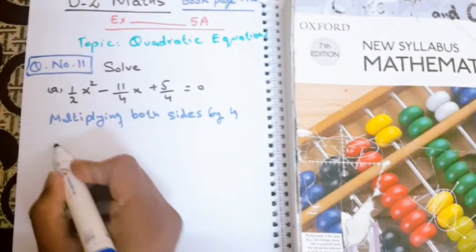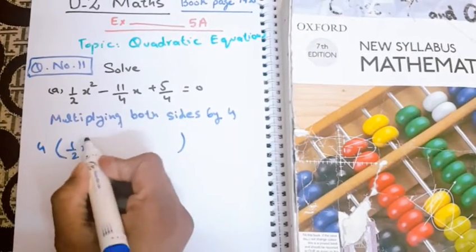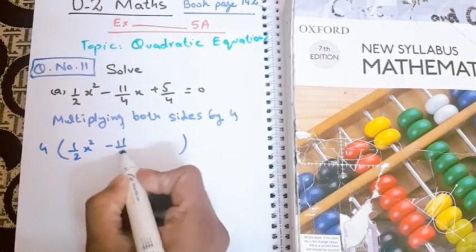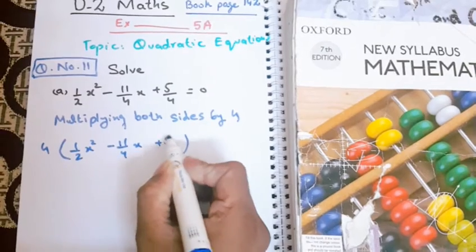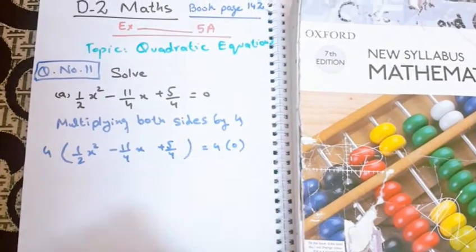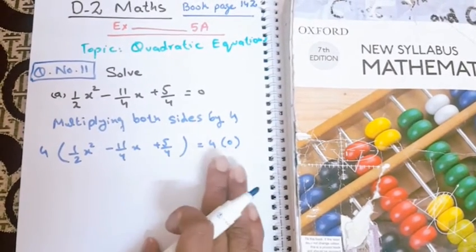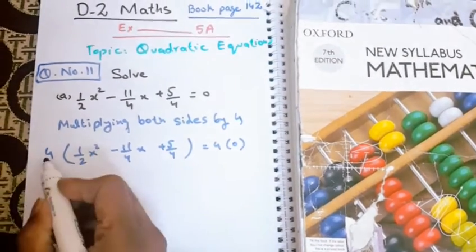4 will be multiplied with 1 over 2x square minus 11 over 4x plus 5 over 4. In the same way, 4 will be multiplied with 0 as well. It's a formality to show 4 here, otherwise we know that 0 times anything is 0. So 4 will enter inside the bracket and be multiplied with everything inside one by one.